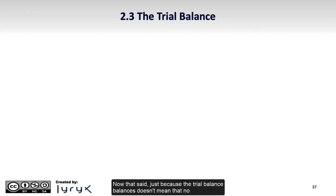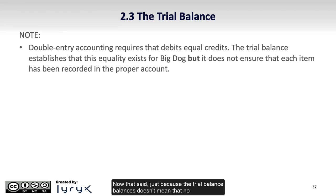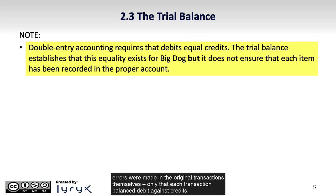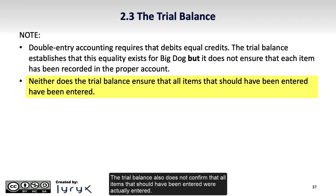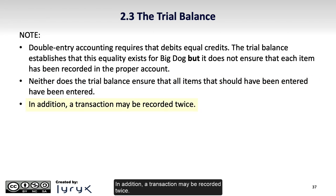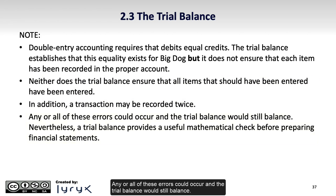Now that said, just because the trial balance balances doesn't mean that no errors were made in the original transactions themselves, only that each transaction balanced debits against credits. The trial balance also does not confirm that all items that should have been entered were actually entered. In addition, a transaction may be recorded twice. Any or all of these errors could occur and the trial balance would still balance.